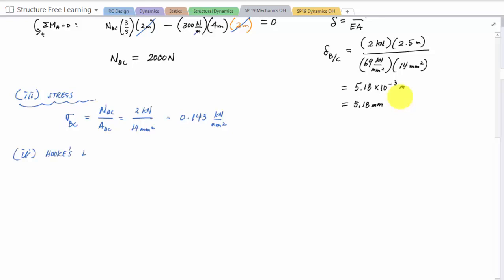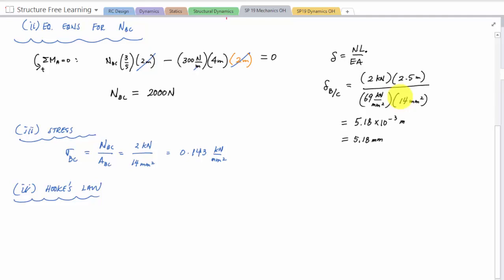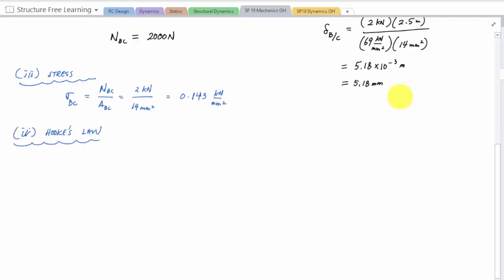And so that would be sigma BC is equal to NBC over the area of BC, which would be 2 kilonewtons divided by 14 millimeters squared, which would be 2 divided by 14. And that would give me 0.143 gigapascals or kilonewtons per millimeter squared. And then I would apply Hooke's law. Another way would be Hooke's law. And the reason this is working is because the way we derive this relationship right here was with normal stress and Hooke's law, and the definition of strain.